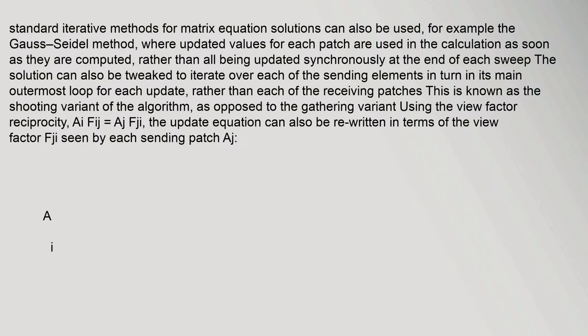Standard iterative methods for matrix equation solutions can also be used — for example the Gauss-Seidel method, where updated values for each patch are used in the calculation as soon as they are computed rather than all being updated synchronously at the end of each sweep. The solution can also be tweaked to iterate over each of the sending elements in its main outermost loop; this is known as the shooting variant of the algorithm as opposed to the gathering variant. Using the view factor reciprocity A_i F_ij = A_j F_ji, the update equation can be rewritten in terms of the view factor F_ji seen by each sending patch.